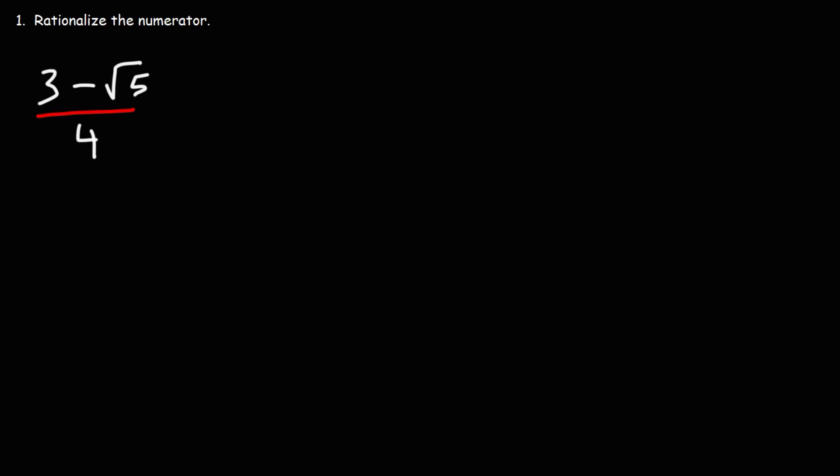In this lesson we're going to focus on solving practice problems where we need to rationalize the numerator. So let's go ahead and work on this fraction. We have 3 minus the square root of 5 over 4. In order to rationalize the numerator we need to multiply both the top and the bottom of the fraction by the conjugate of the numerator.